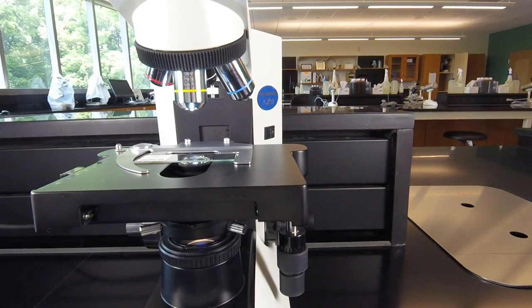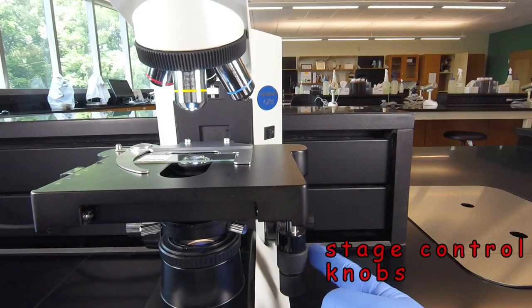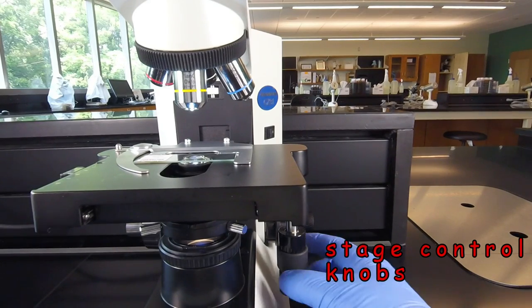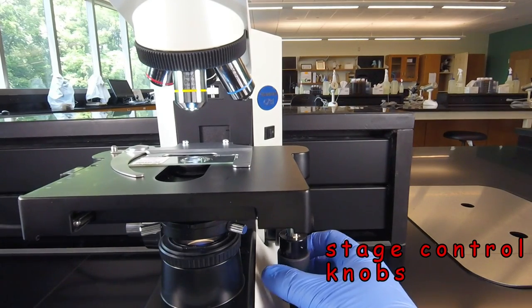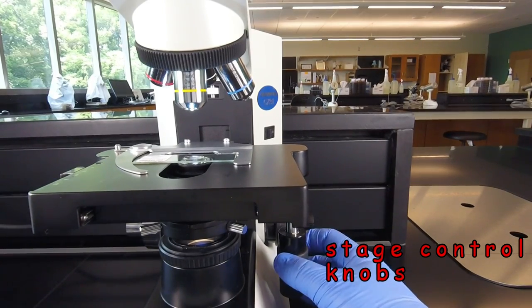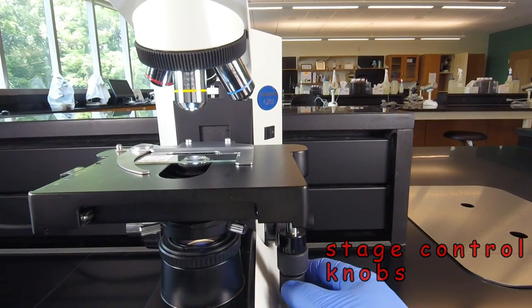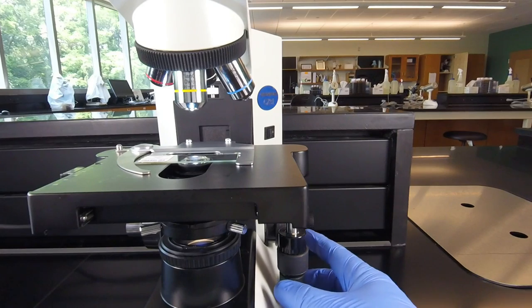Now we're going to use the two knobs that control positioning the slide. Notice if you take the top knob, the one on top here, and you turn that, the slide holder and the stage goes forwards and backwards. And when you turn the bottom one, the slide holder goes left and right. So we can use that to kind of center the slide.